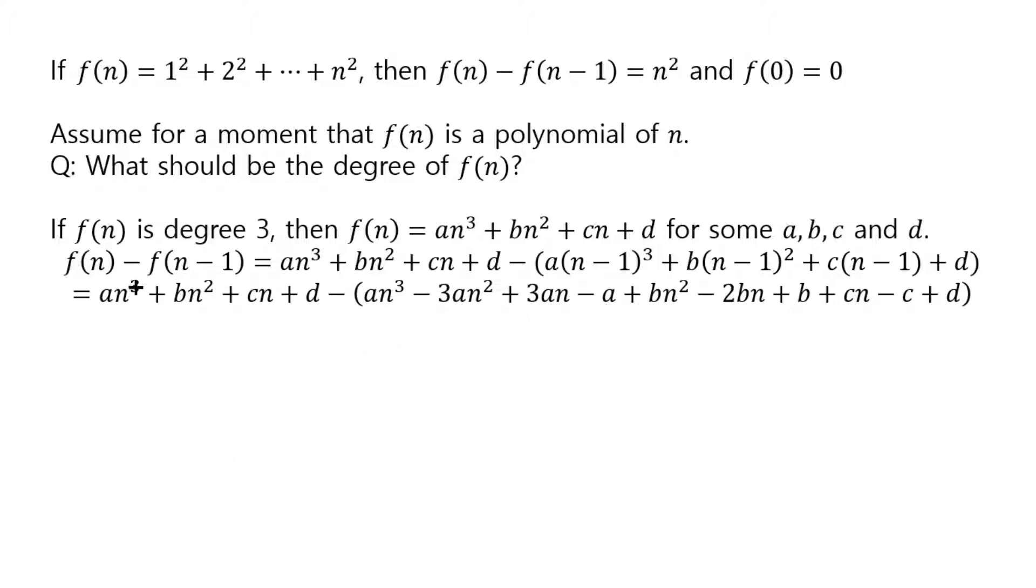And then once you are at this stage, again, you see a whole lot of cancellations. So a n cubed cancels with this one, b n squared cancels with this one, c n cancels with this, d cancels with this, and the result is that you just get this much, which if you simplify or organize in terms of n, we get this.